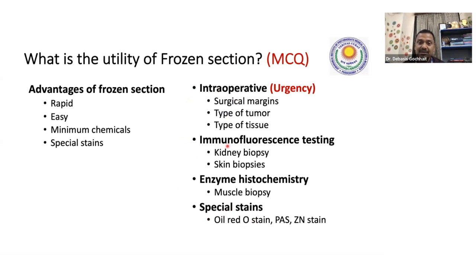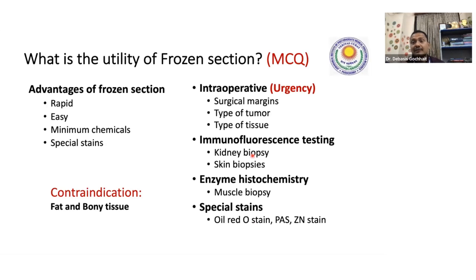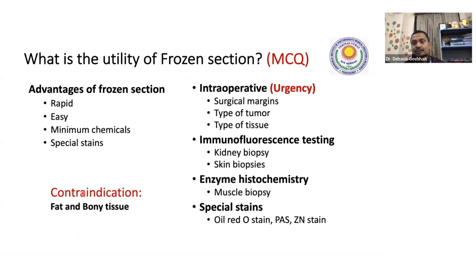So intraoperative histology, immunofluorescence, enzyme histochemistry, and special stains — these are the utilities of the cryostat. What are the contraindications? Fat tissue and bone tissue. Bone tissue cannot be cut because it is very hard — in routine processing, bone is decalcified by putting it in acid, calcium is washed off, and it becomes soft. Fat tissue does not have enough water, so it cannot be frozen properly. Fatty tissue and bone tissue are contraindications for frozen or cryostat sections.